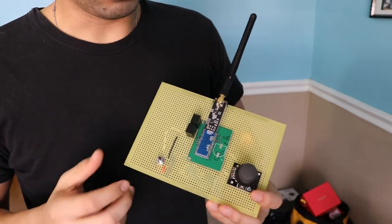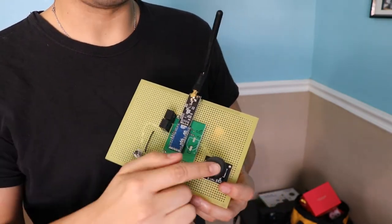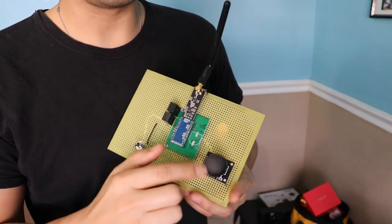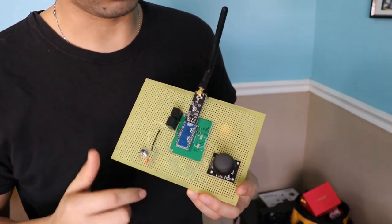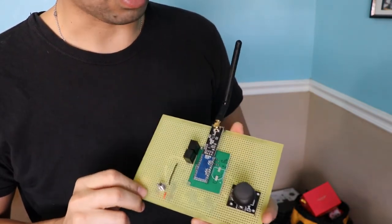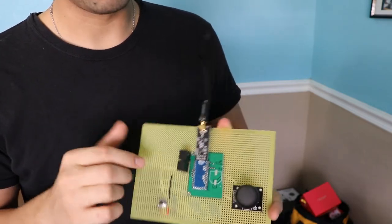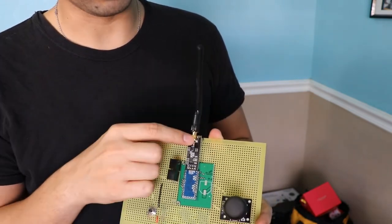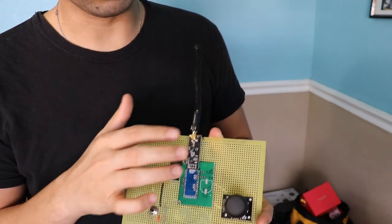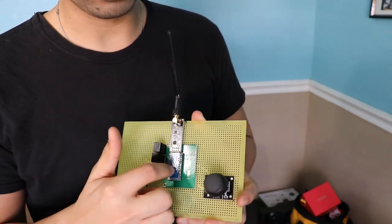This is how the remote controller looks. You have a little joystick here which is just a potentiometer in two dimensions, and you have your on and off switch, your voltage regulators, your RF transceiver, and the Arduino.